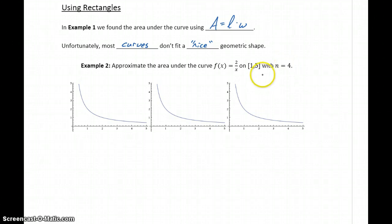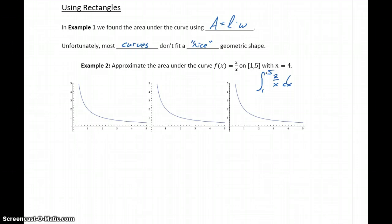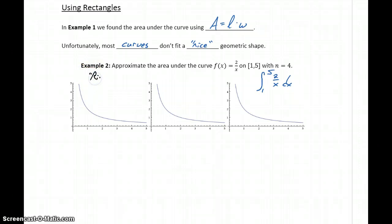The problem that we actually want to evaluate — that we're going to end up approximating — is to integrate the function 2/x dx from x = 1 to x = 5. We're going to look at three different approaches using rectangular regions to come up with some approximations.